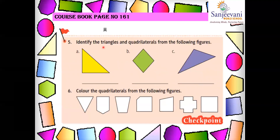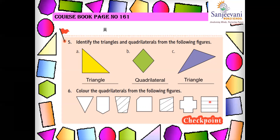Page 161: identify the triangles and quadrilaterals from the following figures. The first one is a triangle, the second is a quadrilateral, and the third is a triangle. Now color the quadrilaterals — you will color the second, third, and fifth and the last one. A quadrilateral is basically made up of four sides — they could be equal or not equal. Pause the video and copy down the answers.